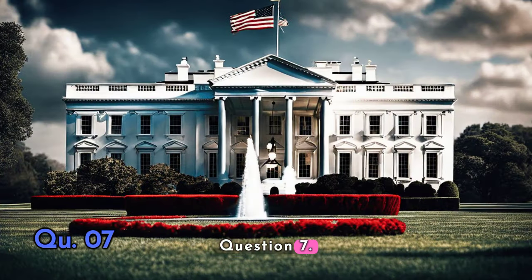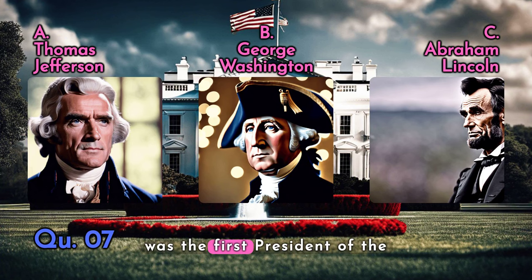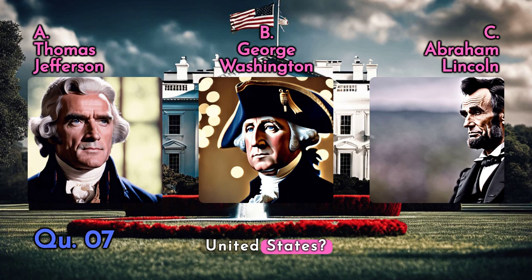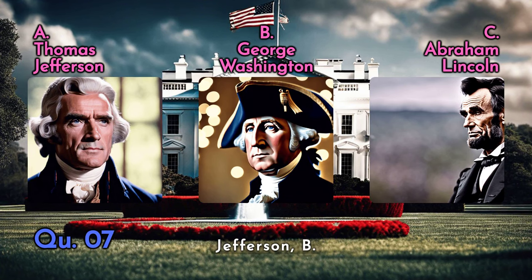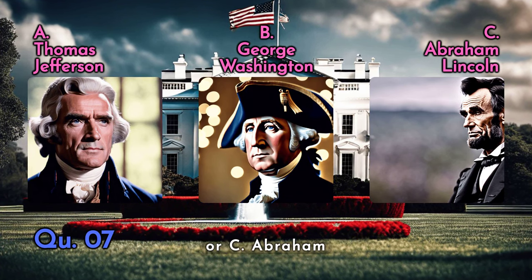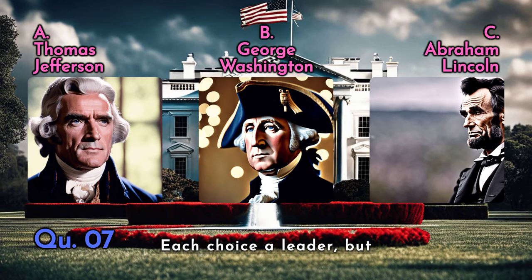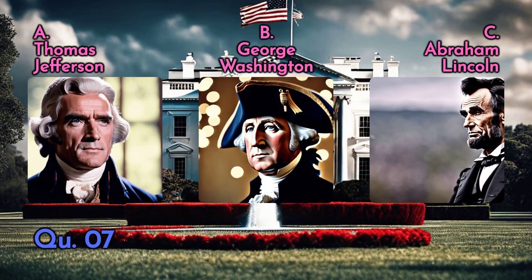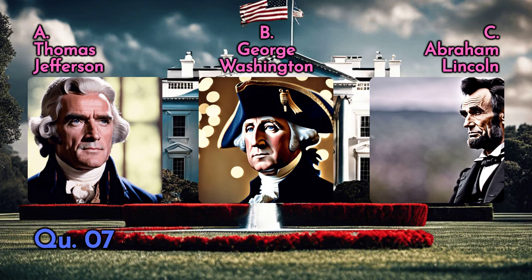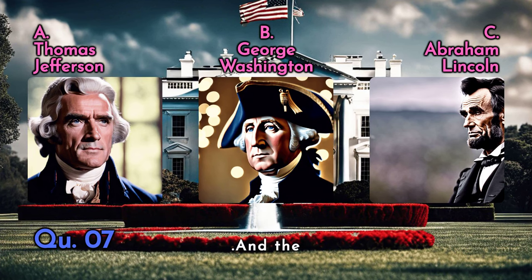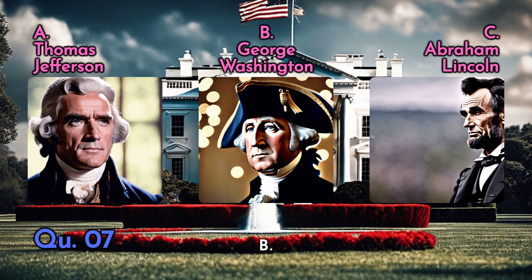Question seven: who was the first President of the United States? A — Thomas Jefferson, B — George Washington, or C — Abraham Lincoln. Each was a leader, but only one marks the beginning. And the answer is B — George Washington.